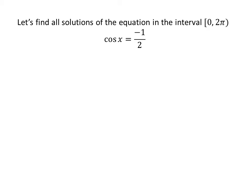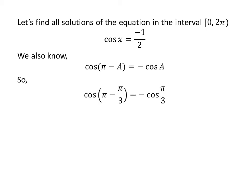Now let us find the solutions to cosine of x equals minus one half in the interval 0 to 2π. Using the identity cosine(π − a) = −cosine(a), we get cosine(π − π/3) = −cosine(π/3). Since π − π/3 = 2π/3 and cosine(π/3) = 1/2, we have cosine(2π/3) = −1/2.